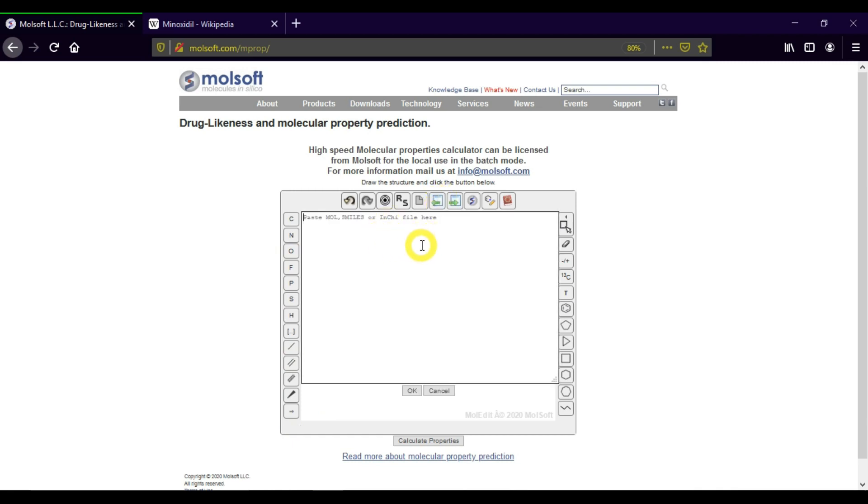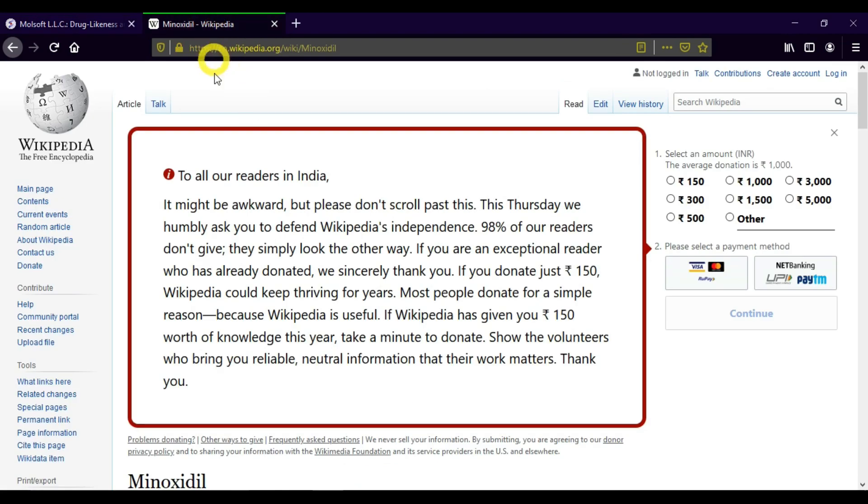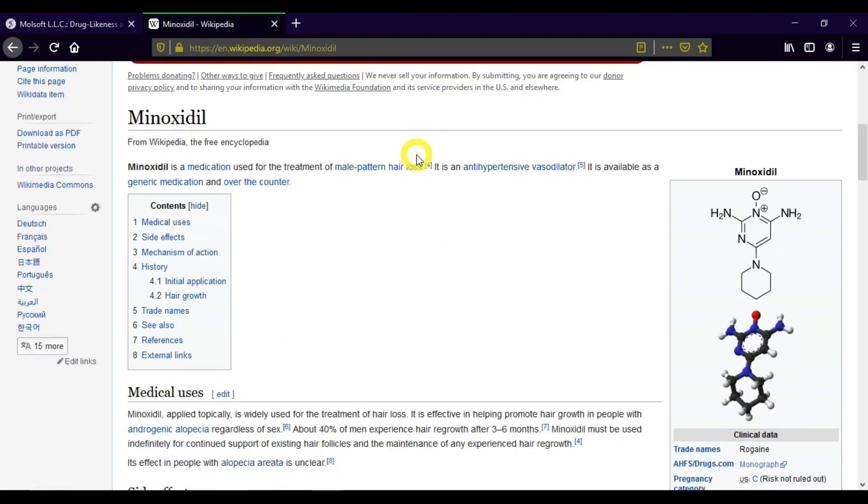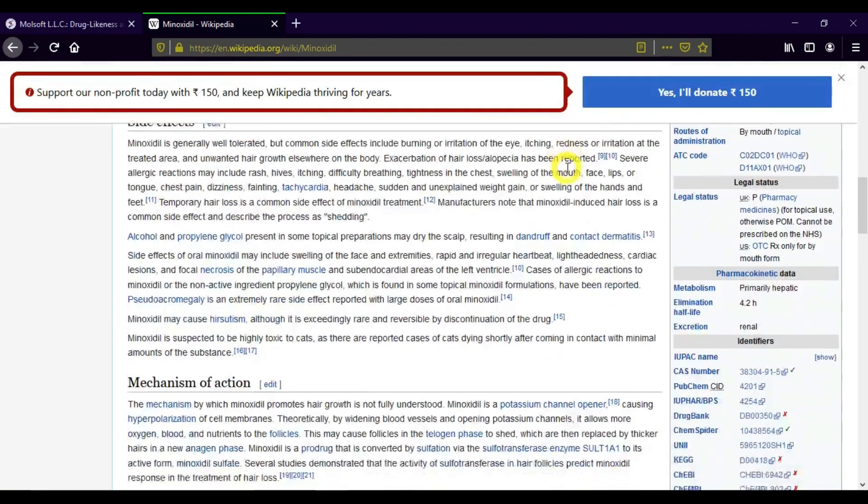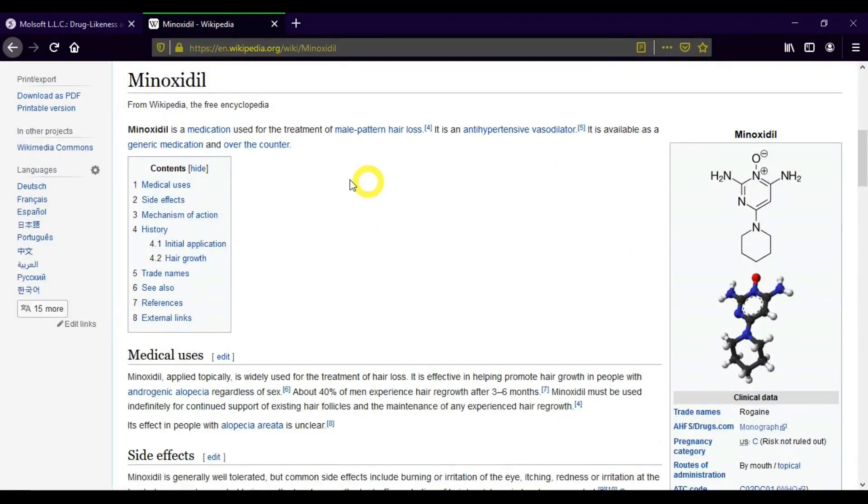You can draw your compound using the tools available on either side of the window, or you can import from SMILES. Let me import minoxidil using SMILES. Click the import icon, and you can paste your SMILE format of your compound here. Let me go and search for SMILES for minoxidil. You can get the SMILES in Wikipedia itself.